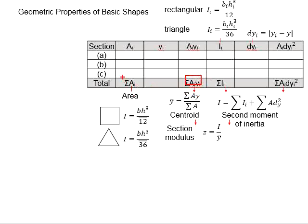These two values can be used to determine the centroid of the member, which is sigma AY divided by sigma A.